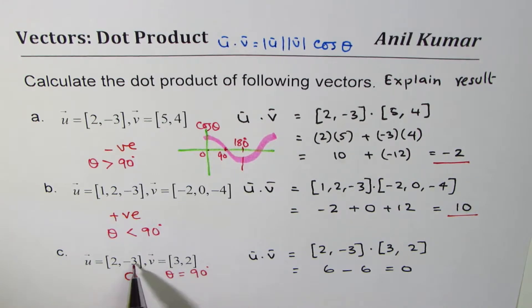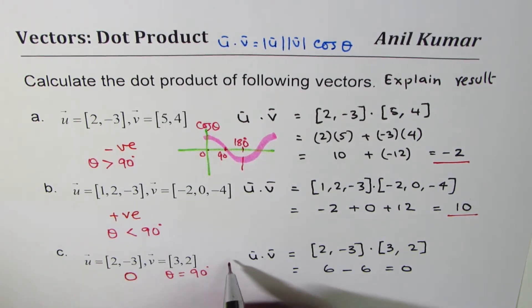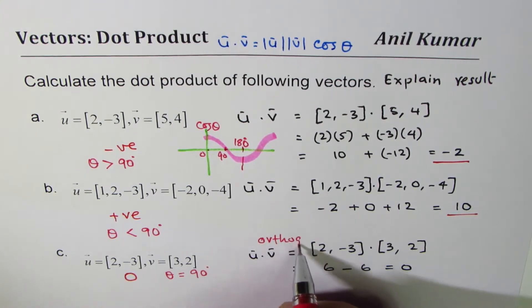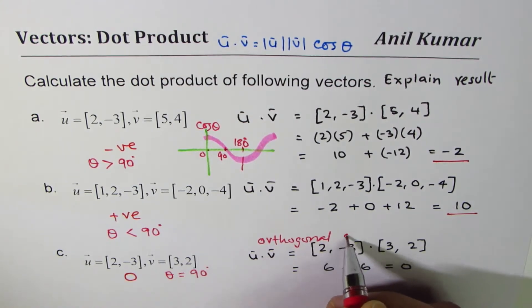So in the third case where the vectors are [2, -3] and [3, -2], you just change the position and change one of the signs. In that case we get the two vectors are perpendicular, so these two vectors are orthogonal or perpendicular.